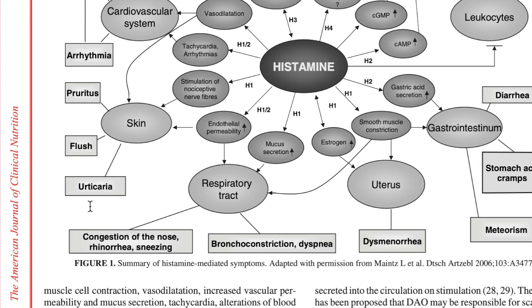Coming back to the diagram, we can see that histamine via the H1 and H2 receptors impacts endothelial permeability, which causes skin issues such as urticaria — that's hives — as well as flushing and pruritus, which is itchiness. So there are big issues with skin in histamine intolerance.